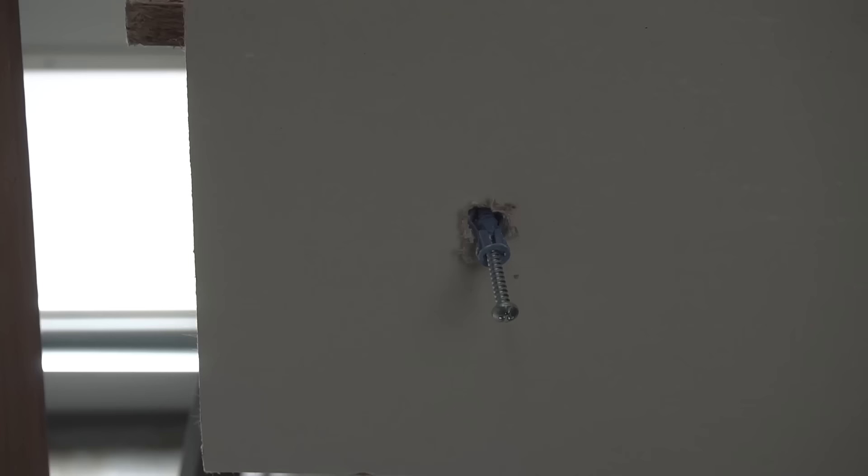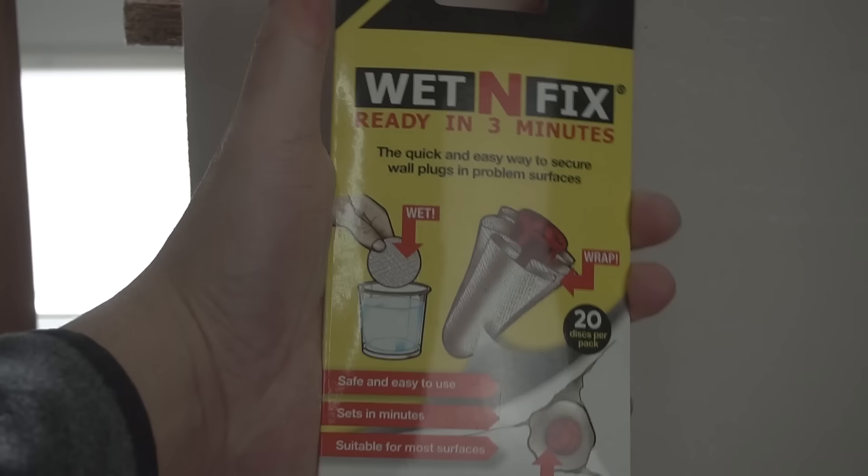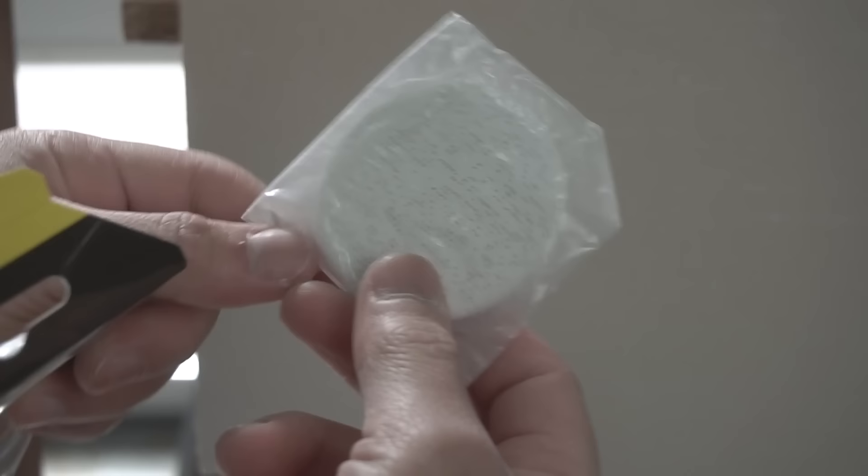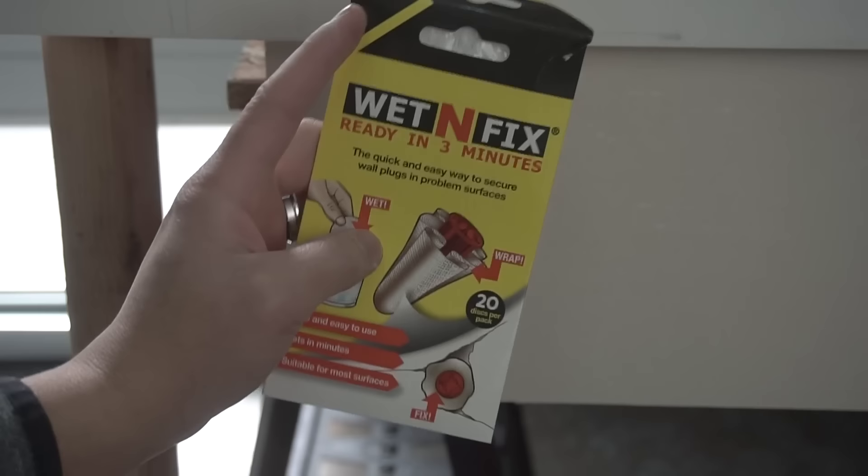Let's do tip number one. I'm not sponsored by them but I want to try out this Wet and Fix ready in three minutes. Basically this is pretty much 20 pieces of these discs. All you got to do is submerge it in water and wrap it around. All the products and tools that I used within this video I'll leave it in the description down below if you're interested.